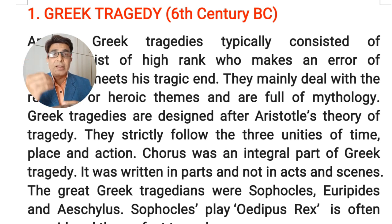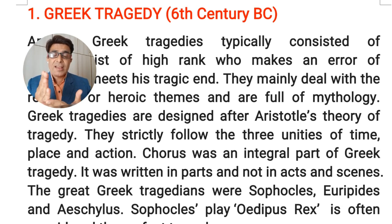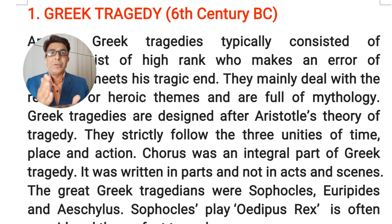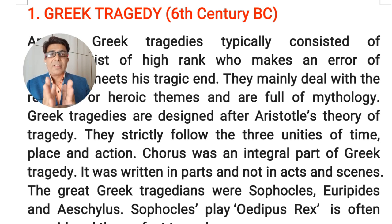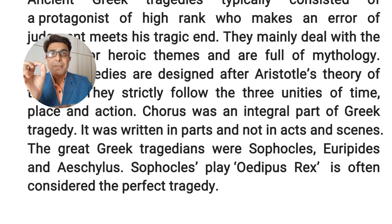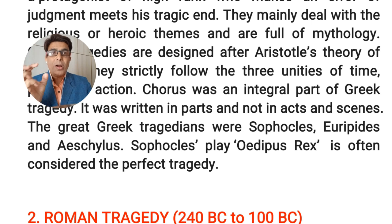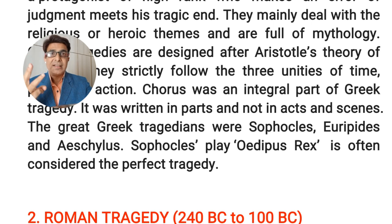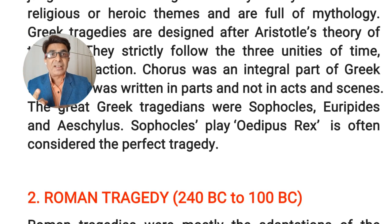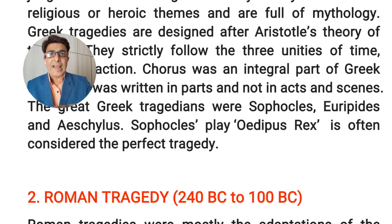Greek tragedies are designed after Aristotle's theory of tragedy as discussed in his Poetics. The dramatists follow all three unities of time, place, and action, and the chorus plays an important role. The three great names of ancient Greek tragedy writing are Sophocles, Euripides, and Aeschylus. Oedipus Rex is one of the best examples of Greek tragedy.